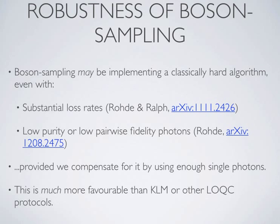Now I'd like to talk about the robustness of boson sampling. Any system is subject to errors, so what about boson sampling? There were some recent results by myself and collaborators showing that boson sampling might still implement a classically hard algorithm even if there are substantial loss rates in the system or if the photons have low purity or low pairwise fidelity. We haven't formally proved this — we've presented evidence based on intuitive arguments — but we do provide some evidence that under these conditions boson sampling remains computationally hard, which is much more favourable than KLM if it's true.